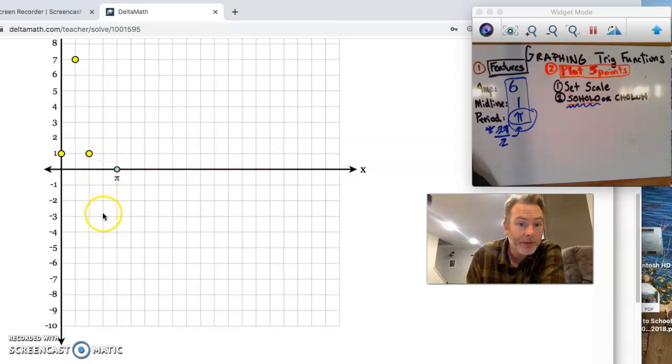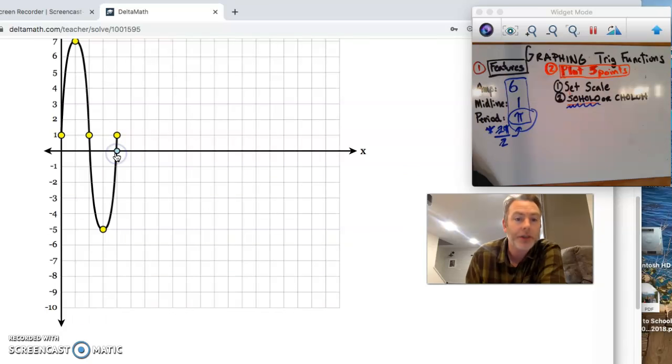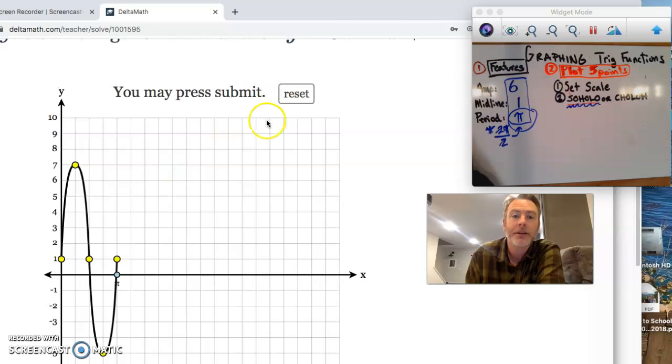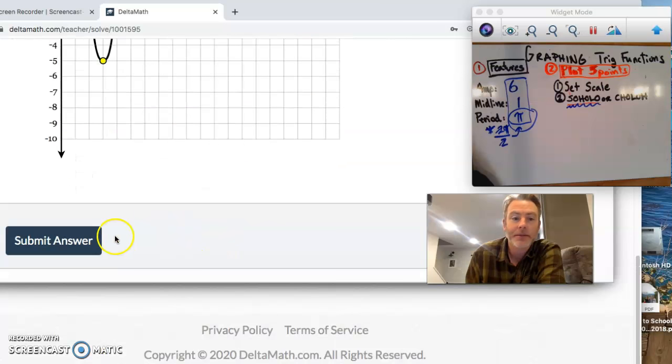So I move to the right one. I'm going to count down 6 units. 1, 2, 3, 4, 5, and 6. And we're going to finally end back on the midline or the origin. Voila! After you put that 5th point down, it draws your curve. Hit submit. You're good to go.